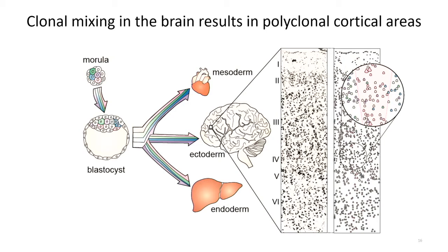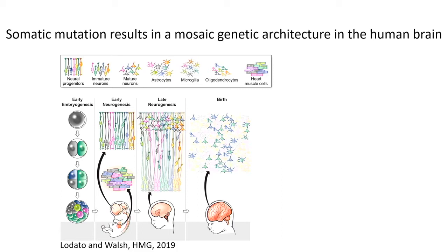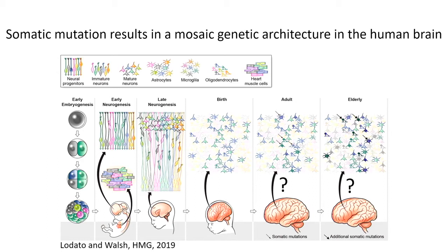This is a proof of concept for the kinds of cell lineage analyses we can now do in humans, analogous to lineage tracing experiments in model organisms. Moving on from development, I was also really interested to know whether somatic mutations continue to accumulate after birth in the brain. We know somatic variants can arise at almost any developmental stage. But what was not known was whether, without cell division in post-mitotic neurons, mutations continue to accumulate and permanently impact cell function — or whether there's just a steady-state level of DNA damage repair active throughout life.